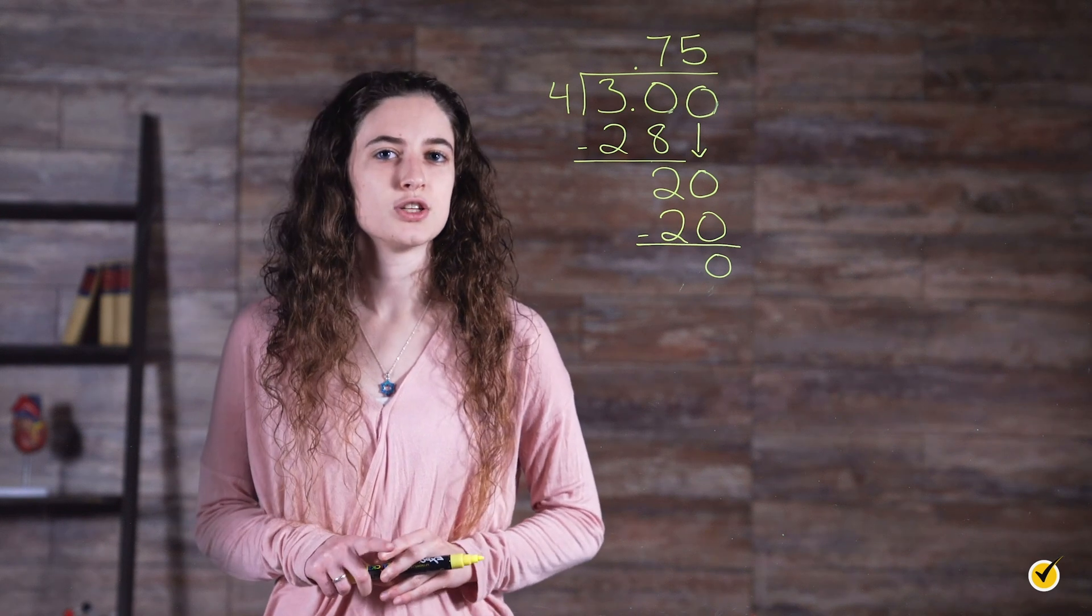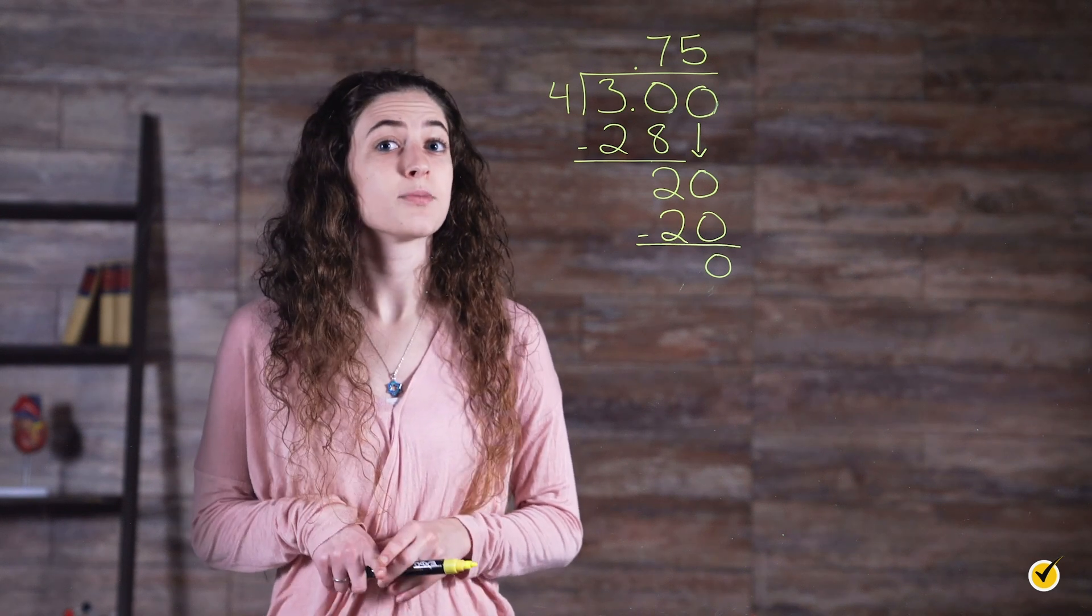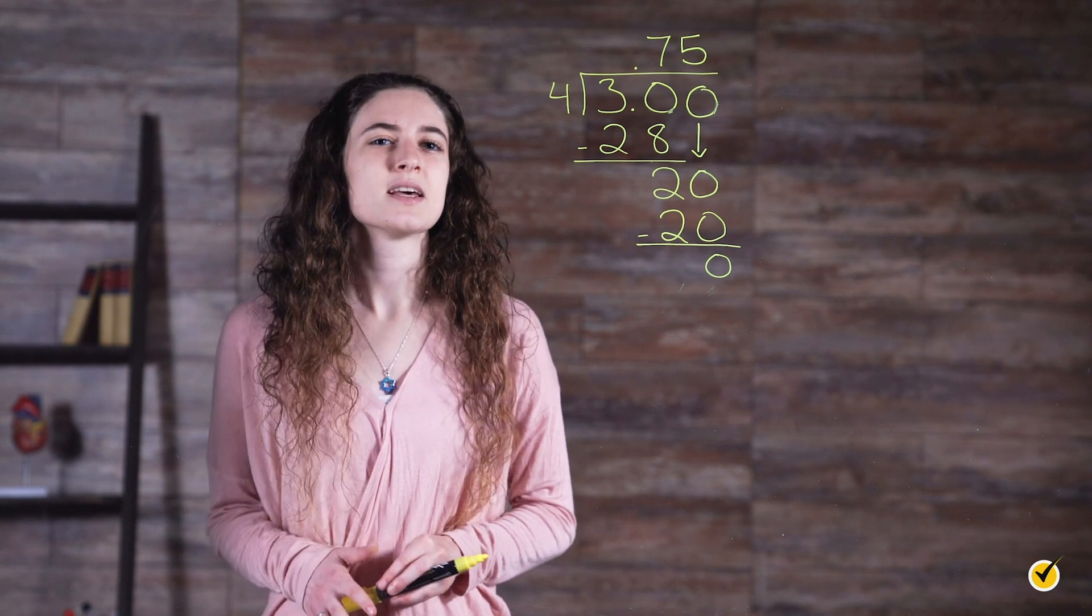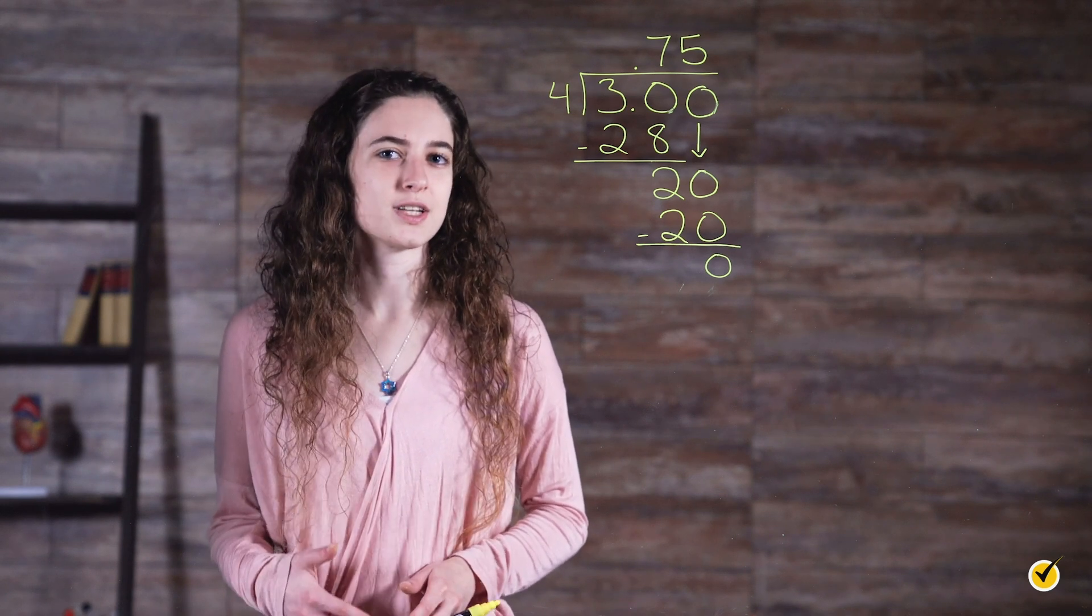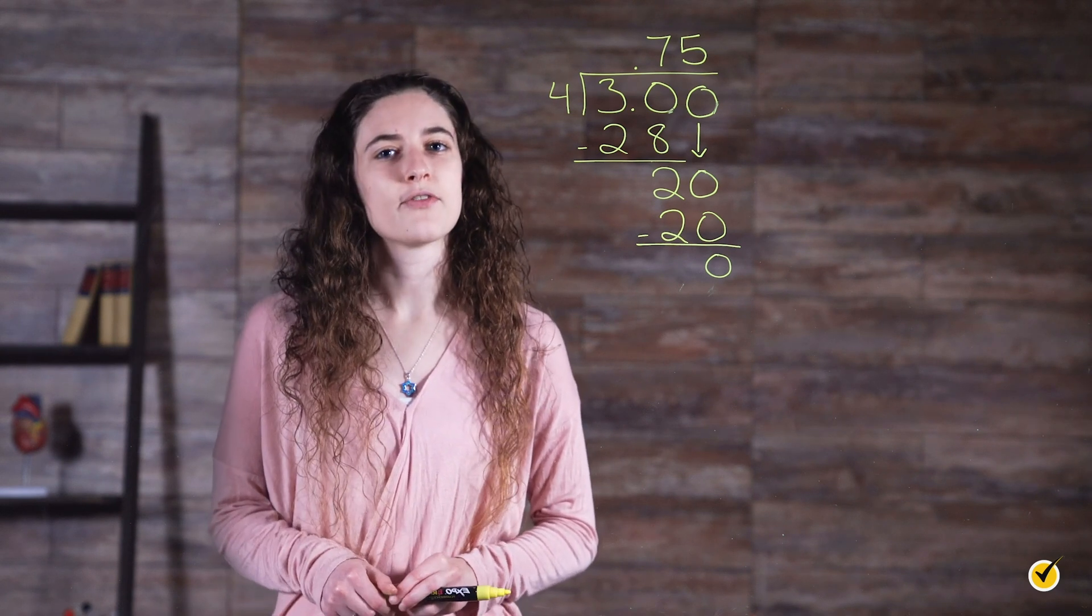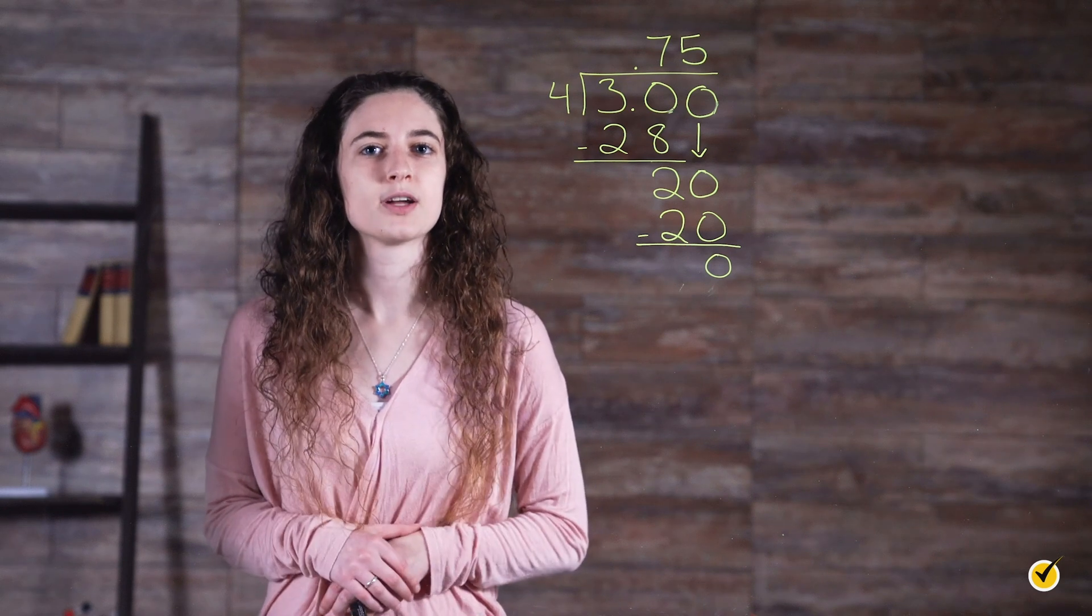Remember, some decimals continue for a really long time or end up repeating, so in these cases, it might be helpful to round to three or four decimal places. That should give you enough information to know where to place that number in a list.